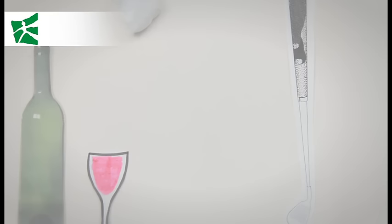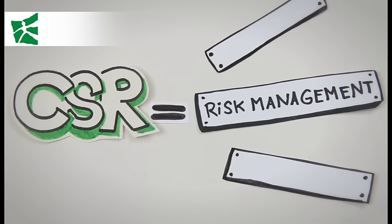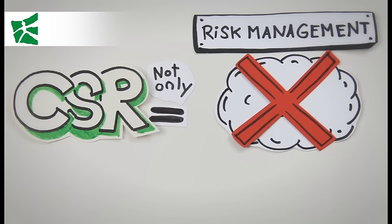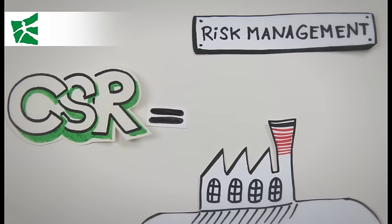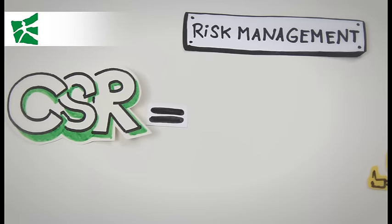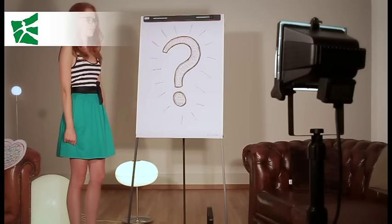However, risk and compliance management are only one aspect of corporate responsibility correctly understood. Firstly, CSR is not just about preventing bad practices, like corruption and fraud. Secondly, this approach does not question a company's business activities as such. In fact, compliance management could be an efficient control mechanism even in organizations like the mafia. The more challenging question is, how can companies contribute to a good society through good business practices?